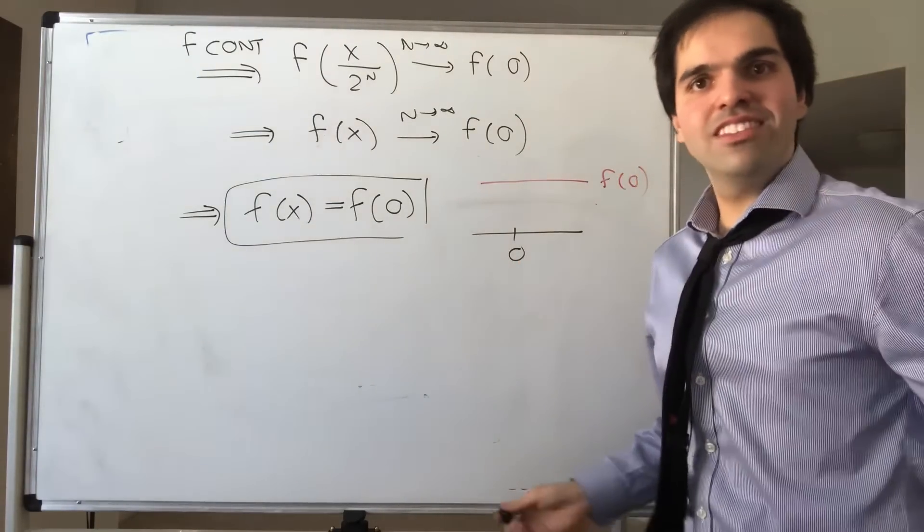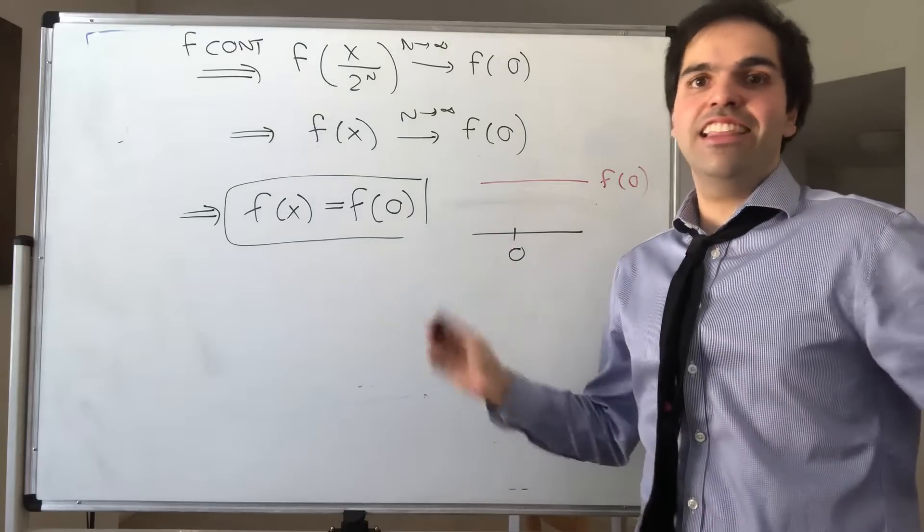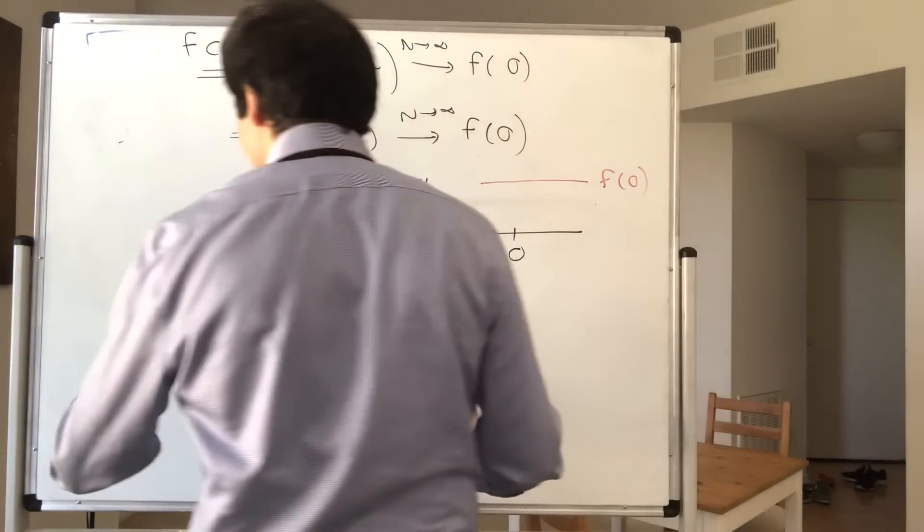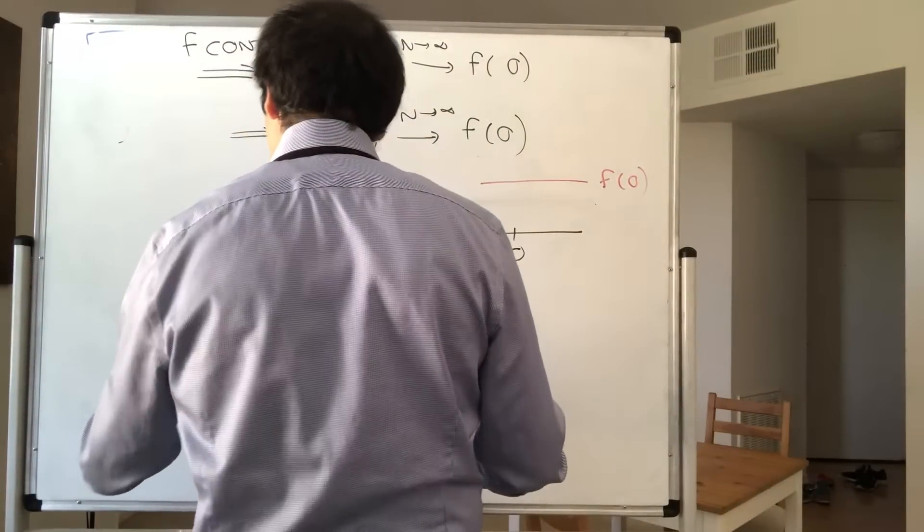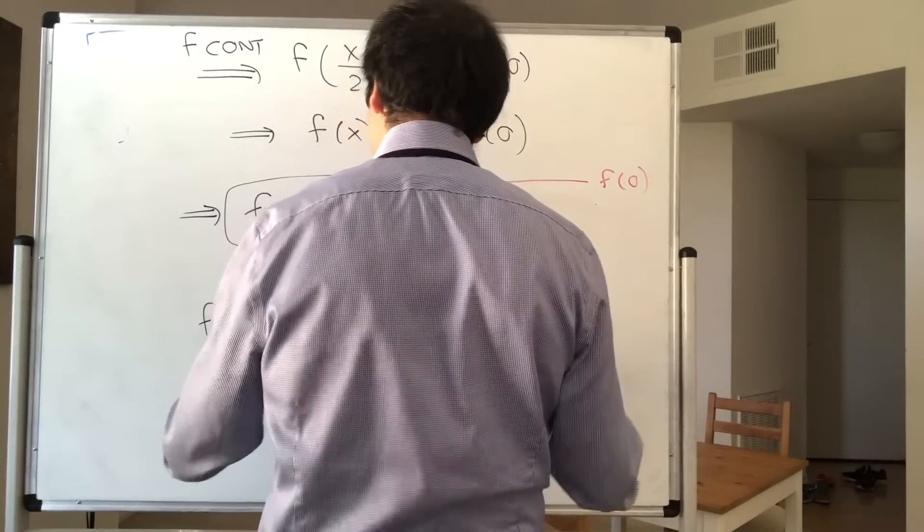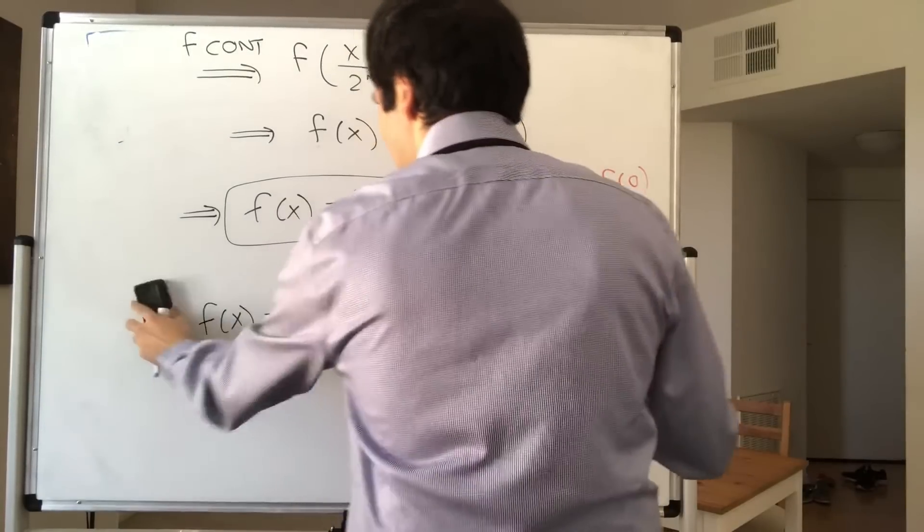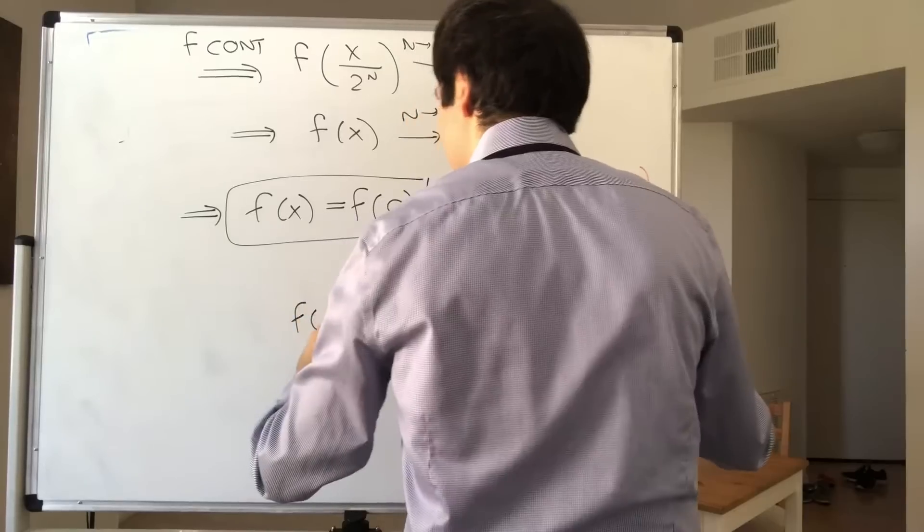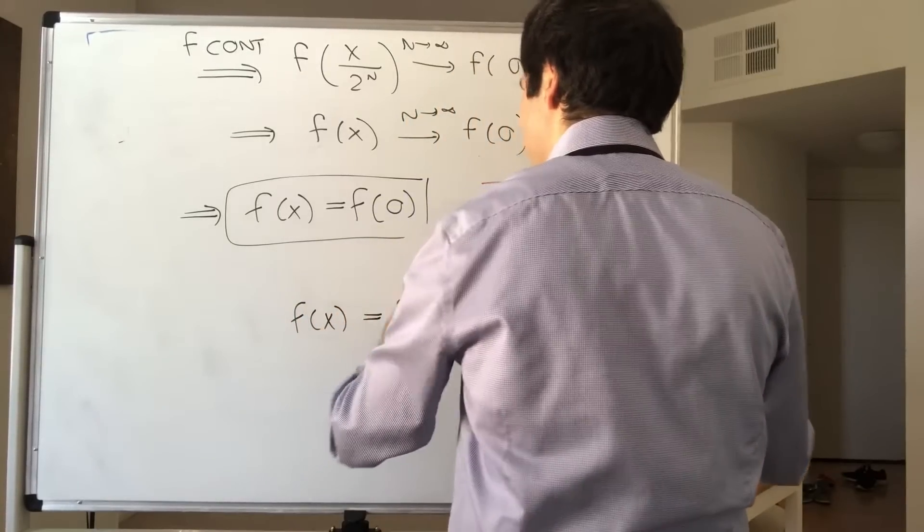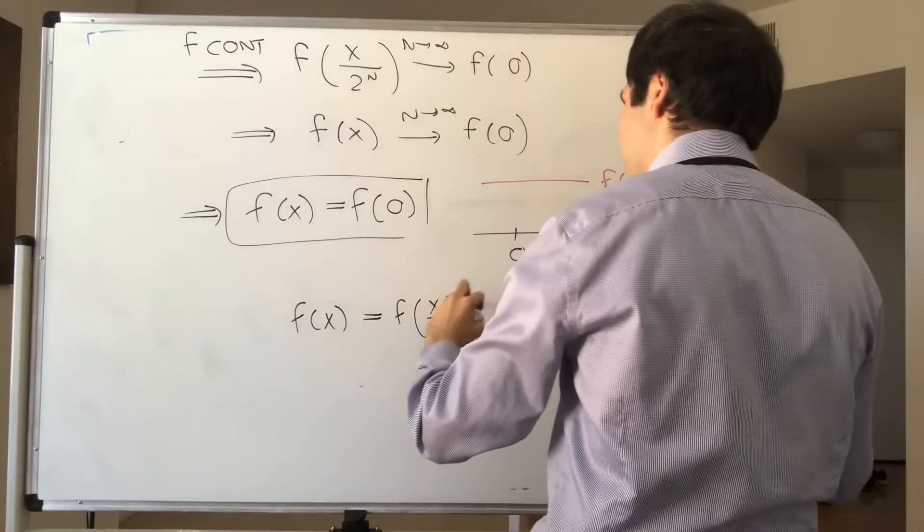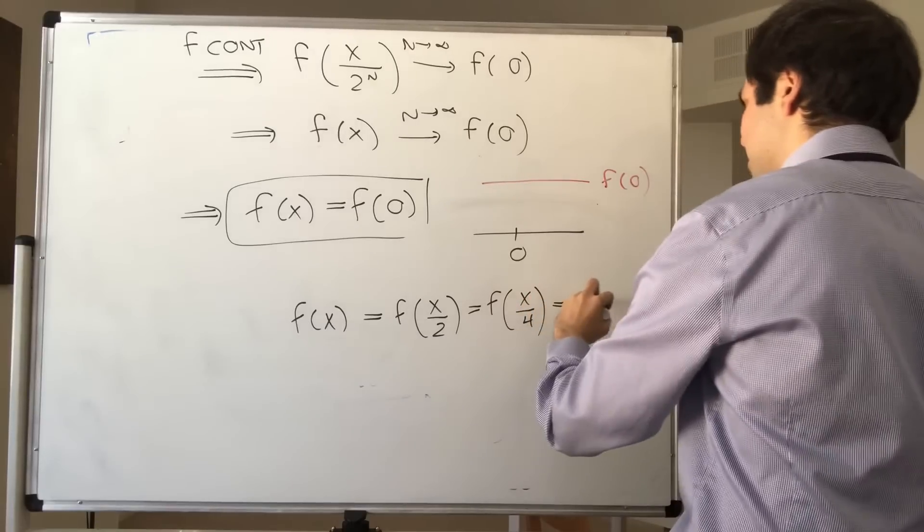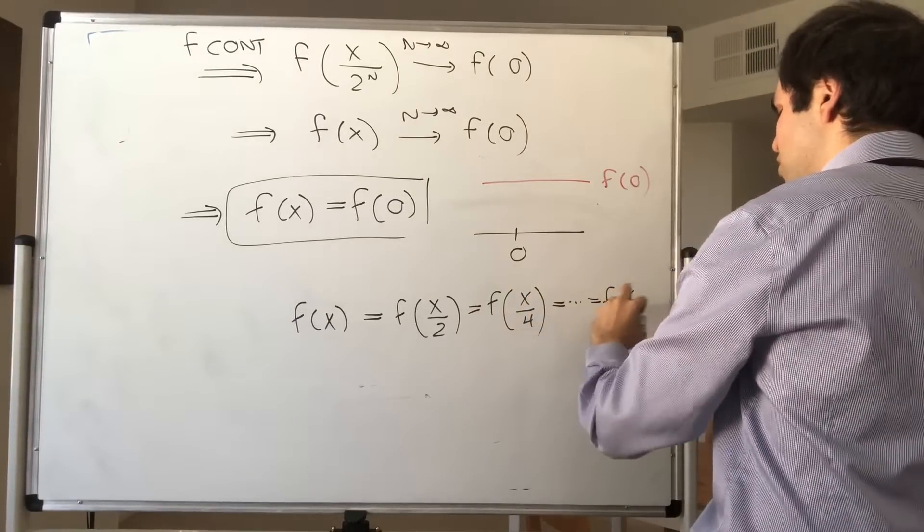However, if f is not continuous, then anything can happen. Because notice, we still have this property that f of x equals f of x over 2. So f of x, on the one hand, that's again f of x over 2, that's f of x over 4, and in general, f of x over 2 to the n.